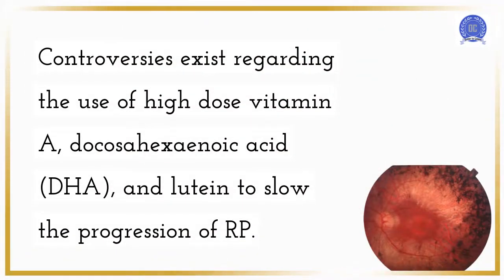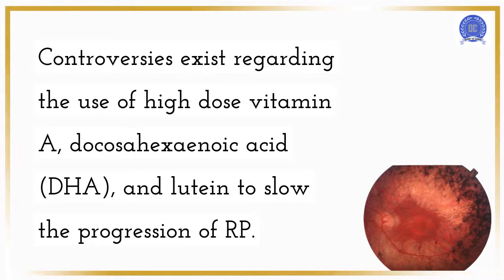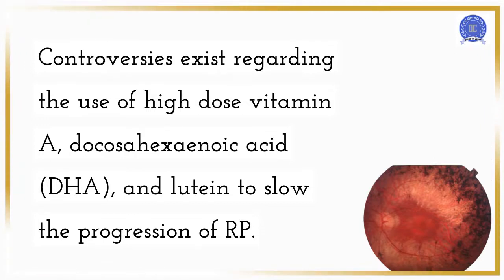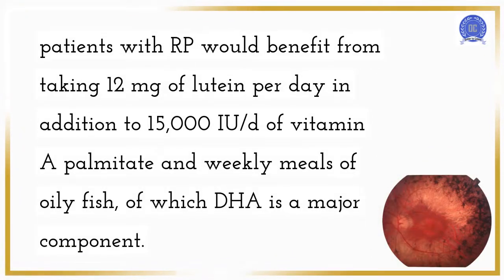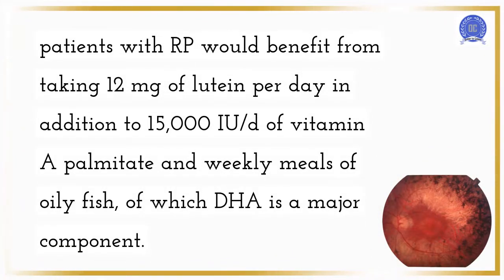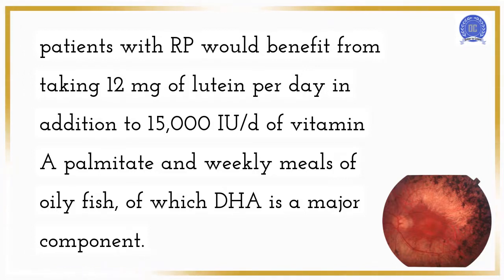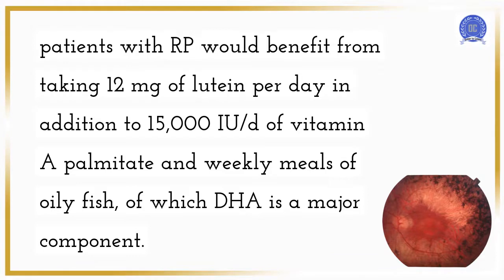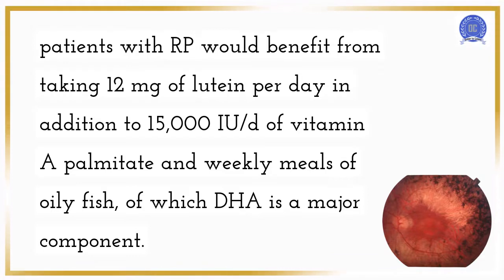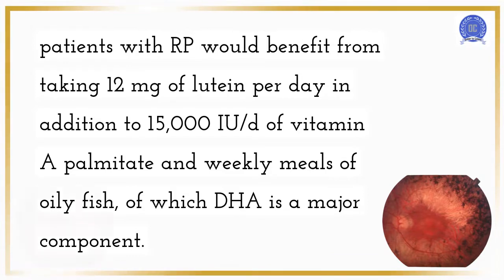Controversies exist regarding the use of high-dose vitamin A, docosahexaenoic acid, DHA, and lutein to slow the progression of RP. Patients with RP would benefit from taking 12 mg of lutein per day in addition to 15,000 IU/day of vitamin A palmitate and weekly meals of oily fish, of which DHA is a major component.